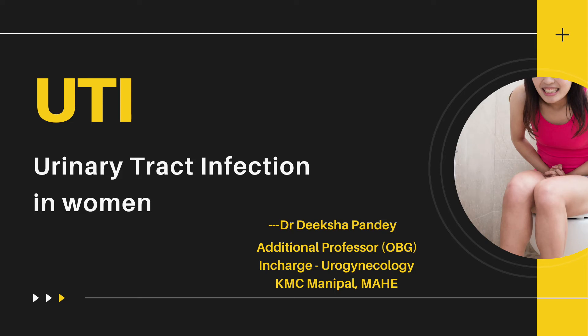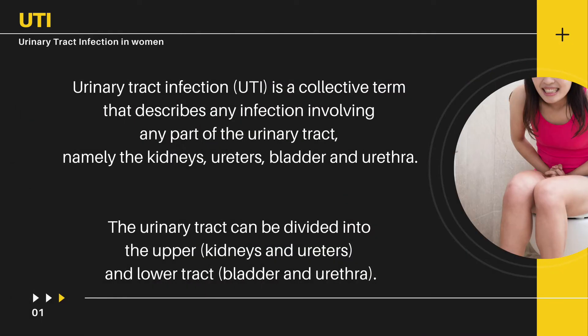Urinary tract infections — today we'll be talking about UTI in women in particular. Urinary tract infection is a collective term that describes any infection involving any part of the urinary tract, namely the kidneys, ureter, bladder, and urethra. To simplify it, when kidneys and ureters are involved we call it upper urinary tract infection, and when bladder or urethra are involved we call it lower tract infection.